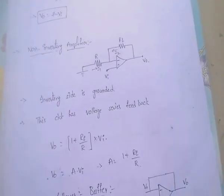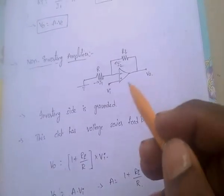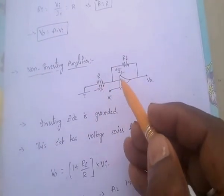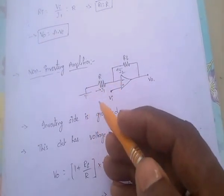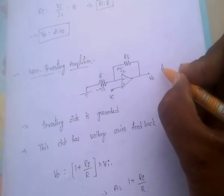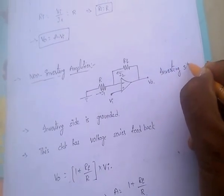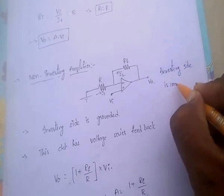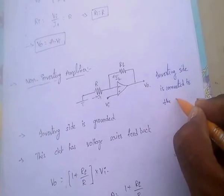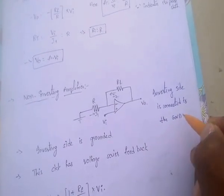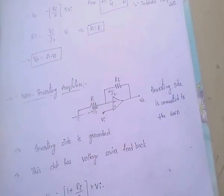Coming to the next one: non-inverting amplifier. For this non-inverting amplifier, the inverting side is connected to the ground. This circuit has voltage series feedback.